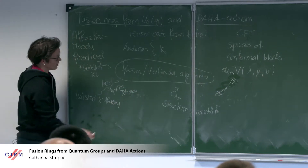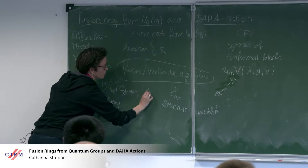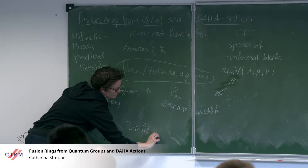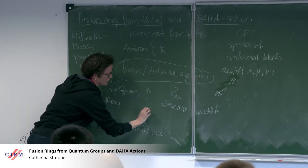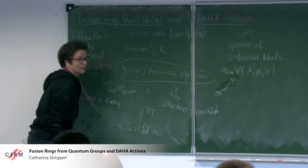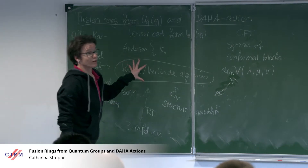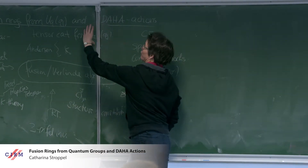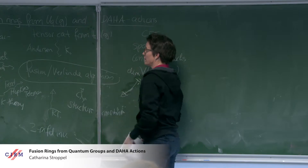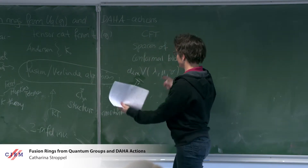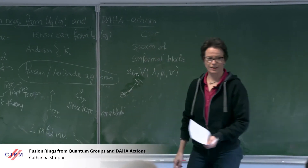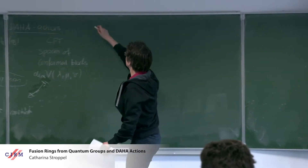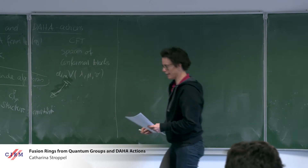Finally, the last construction I want to mention is when you want to construct three-manifold invariants, and I mention Reshetikhin. So they all talk about this thing. Today I want to completely focus on the aspect from quantum groups, but these other aspects come in by looking at certain roots of unity, which I will comment on a bit later.